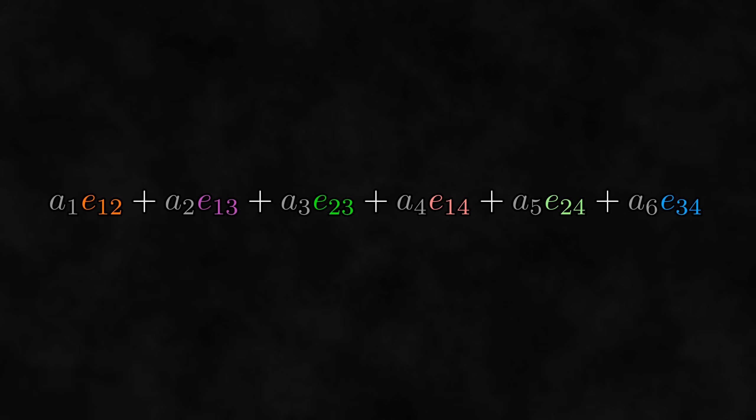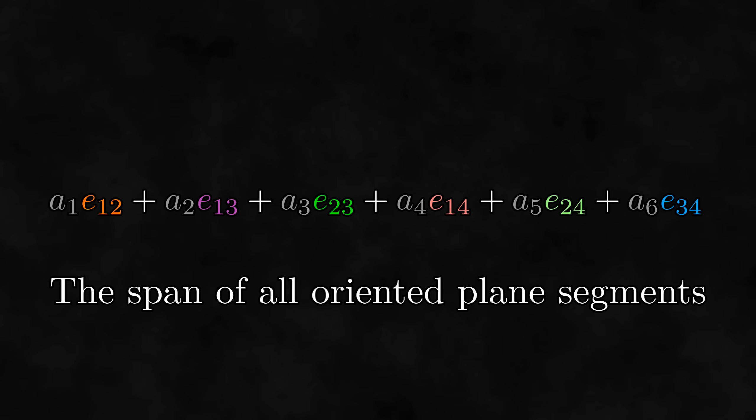In fact, each of these basis bivectors is an oriented plane segment, so we can also think of bivectors as the span of all oriented plane segments. This is nicer than using the span of a particular basis because it is closer to our original conception of bivectors.